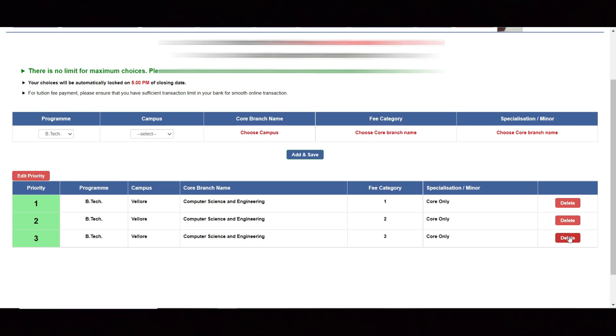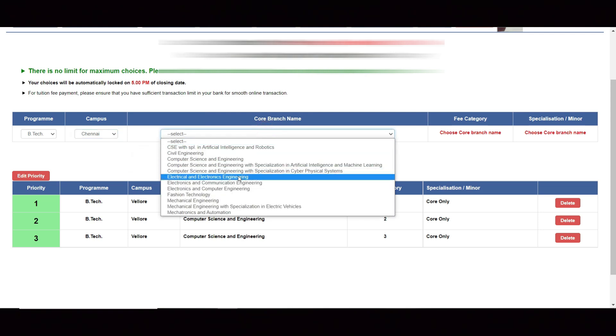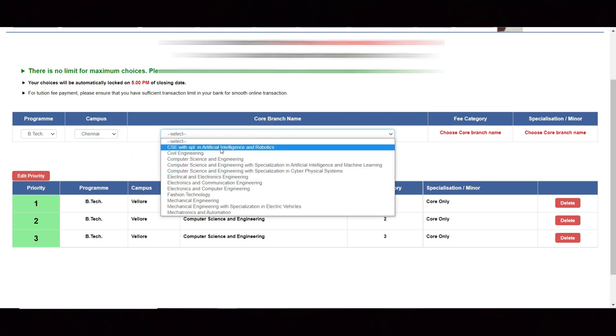For example, let me give one more choice - Vellore and CSE with specialization in artificial intelligence and robotics. I am selecting category 1 core only, so then add and save. This is how it appears.